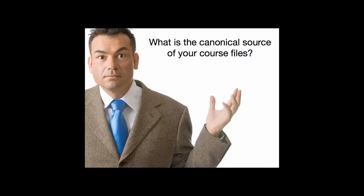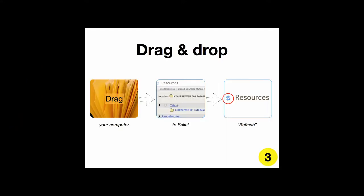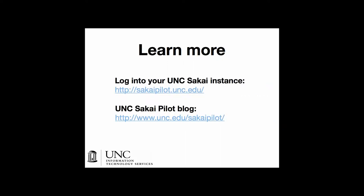Either way, you're going to need to drag that canonical source to Sakai or down from Sakai. And then you're going to make your edits as you normally would, and then drag and drop them back where they belong. And that's all there is to it.